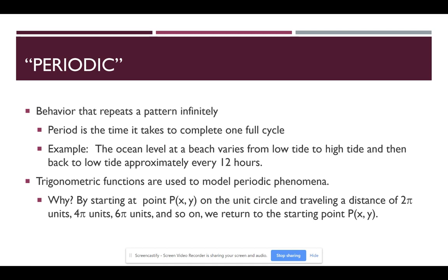Periodic is a behavior that repeats a pattern infinitely. We rotate from spring, summer, autumn, winter – spring, summer, autumn, winter. And it basically takes 365 days or 12 months to go through that particular pattern. And so that is a periodic pattern. And the period – which is the time it takes to complete one full cycle – for the seasons is 365 days or 12 months.